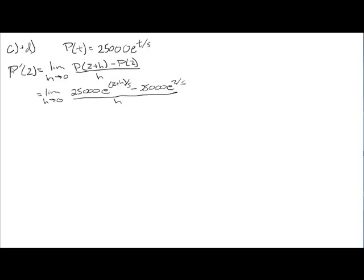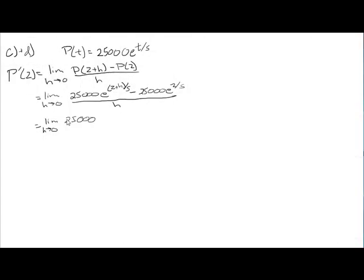And this is all over h. Now, we can start to estimate this as is with smaller and smaller values of h. But I'm going to simplify this just a little bit because it's what we will do later in the semester when we talk about derivative rules. First thing I'm going to do is rewrite this. We have e to the 2 plus h over 5. That's the same as e to the 2 over 5 times e to the h over 5.